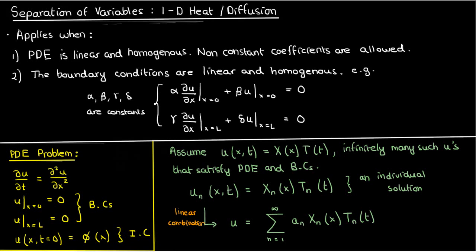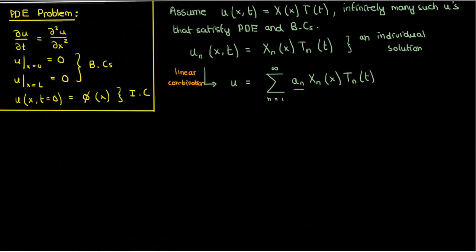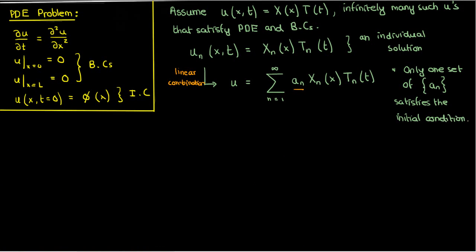You might wonder: if any linear combination satisfies the PDE and boundary conditions, how is our solution meaningful and unique? After all, I could use whatever I want for the a_n coefficient values and come up with something that satisfies the PDE and boundary conditions. However, there is only one linear combination with a particular set of coefficients that also satisfies the initial condition. So the initial condition ensures we end up with a unique linear combination and thus a meaningful solution.